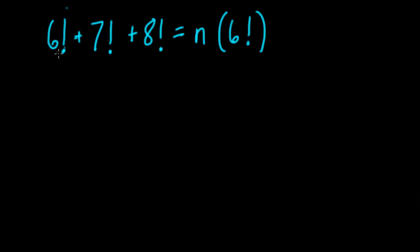All right, in this problem we have 6 factorial plus 7 factorial plus 8 factorial equals n times 6 factorial. And here we want to solve for n.